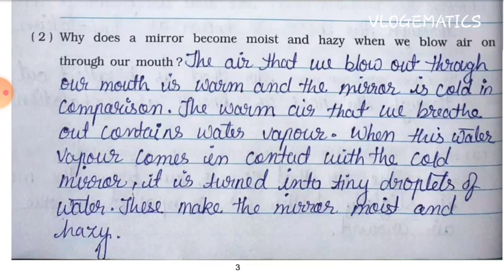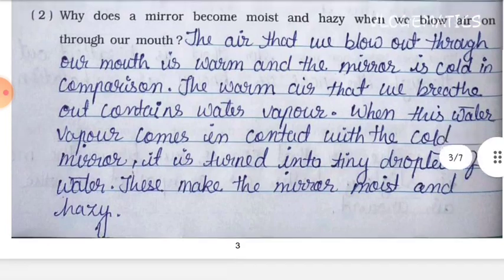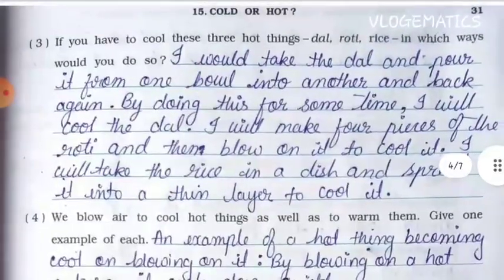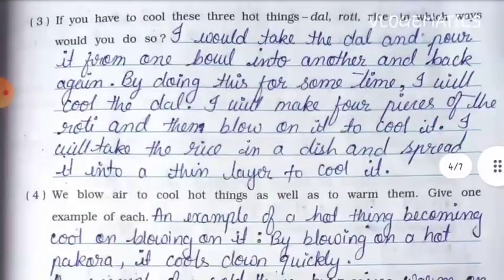Question two: Why does a mirror become moist and hazy when we blow air on it through our mouth? Answer: The air that we blow out through our mouth is warm and the mirror is cold in comparison. The warm air we breathe out contains water vapor. When this water vapor comes in contact with the cold mirror, it turns into tiny droplets of water, making the mirror moist and hazy.